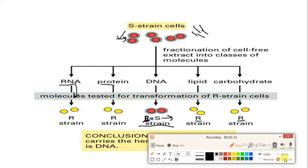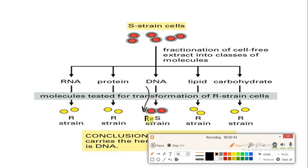Here, this type of Streptococcus pneumoniae strain — the R-strain — is taking up DNA from the surrounding. I got to see that the R-strain, which is a non-virulent strain, gets converted into the S-strain, which is a virulent strain. So the uptaking of genetic material from the surrounding leads to the R-strain getting converted into the S-strain.